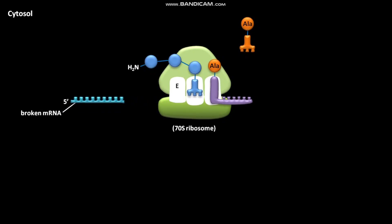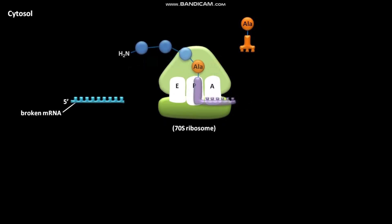The tmRNA then adds its carried alanine to the nascent polypeptide chain. Thus the tmRNA mimics a tRNA. The tmRNA has no codon to guide it, and the ribosome then translocates 10 codons from the tmRNA.